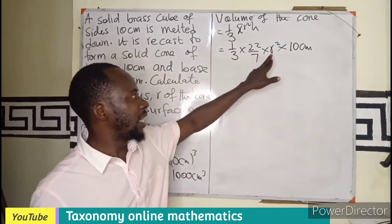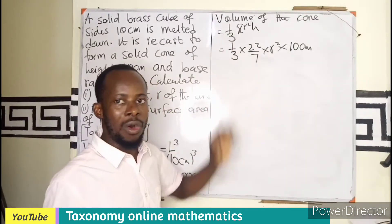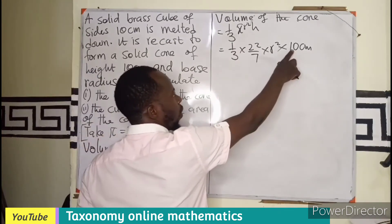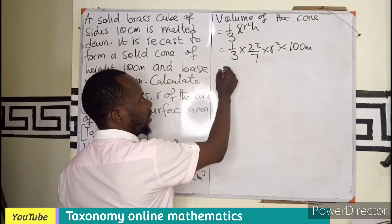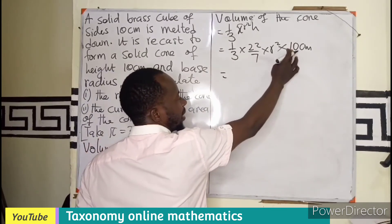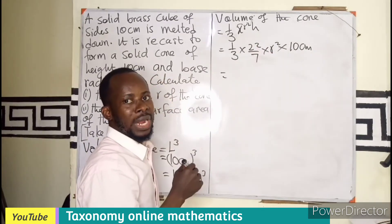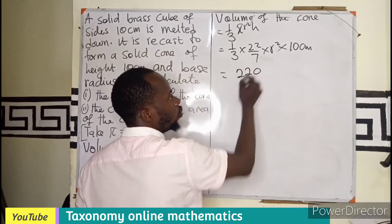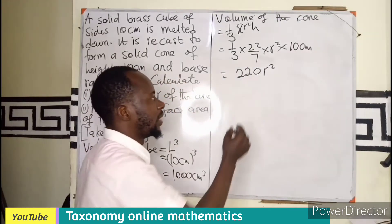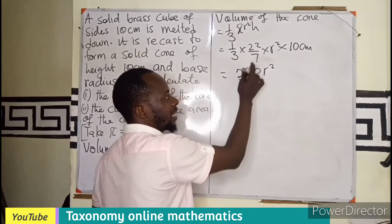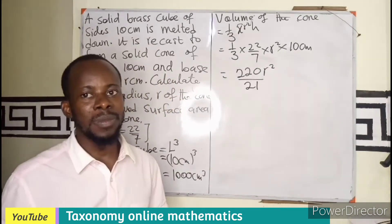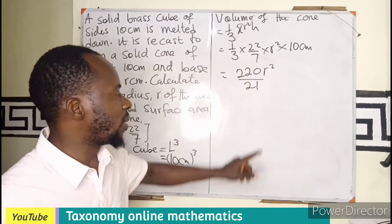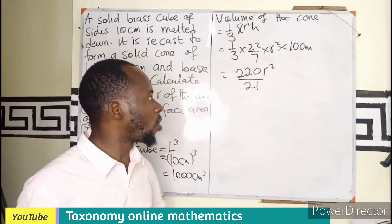So with this, what do we do? We are left with the r square. So we can multiply all the figures together and see what we can get. Using all this to be on top, I'll be having 10 times 22, that will be 220 times 1. Still a half worth. 220 r square. This will be divided by 7 times 3 is 21. This is how far we can go in terms of the volume of the cone, because the value of r is unknown.